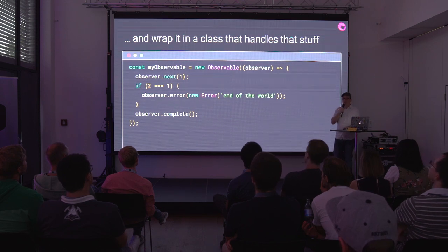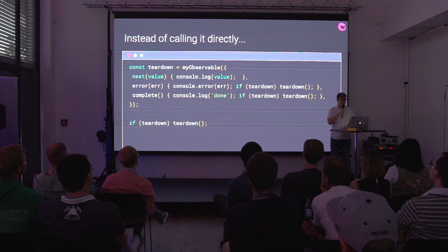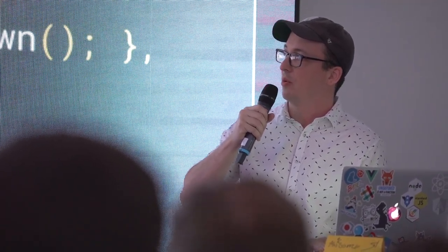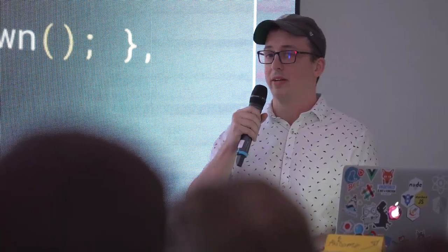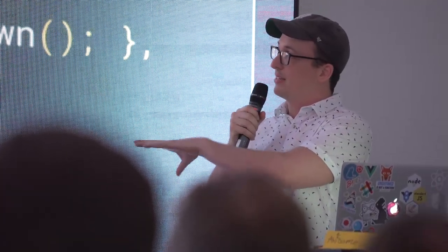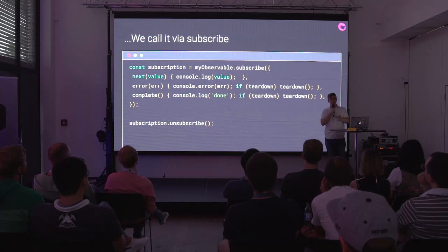It literally is the same thing. When you call subscribe — rather than calling it as a function — what we're doing is calling subscribe on it. It literally just calls that function you've wrapped in this observable type. It's going to take the object or callbacks you passed to it and wrap them in a safer object called a subscriber that has some guarantees around it.